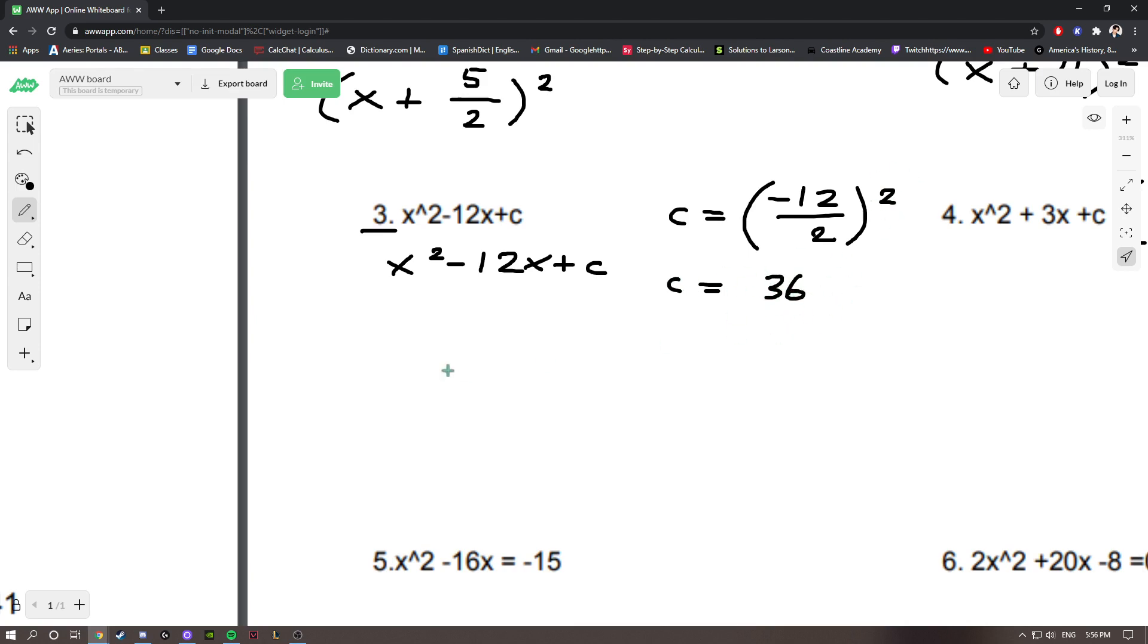So, we'll get 36 is equal to c. x squared minus 12x plus 36. And, when we simplify this, this should be x minus 6 squared.